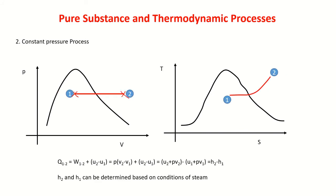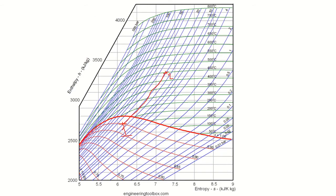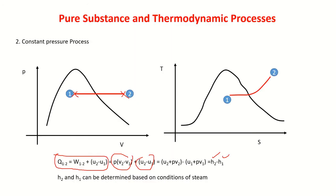Once the process is represented, all properties can be determined. For a closed system executing a constant pressure process: Q = W + (U2 - U1), where work done W = P(V2 - V1). Combining: Q = H2 - H1. The enthalpies h1 and h2 can be read from the Mollier diagram or obtained from steam tables (property tables).